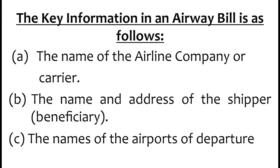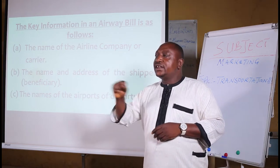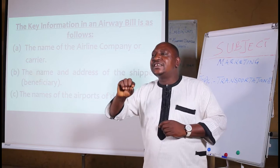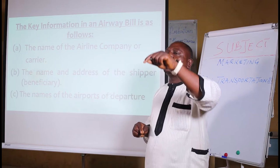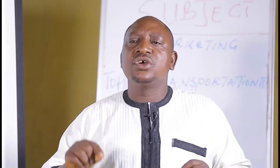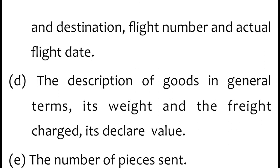We are going to look at the key information in an airway bill, which is as follows. A: the name of the airline company or carrier must be written on the key information of the delivery note, which is the consignment note. B: the name and address of the shipper. C: the names of the airports of departure must be written on the delivery note. The flight number and actual flight date must also be included.